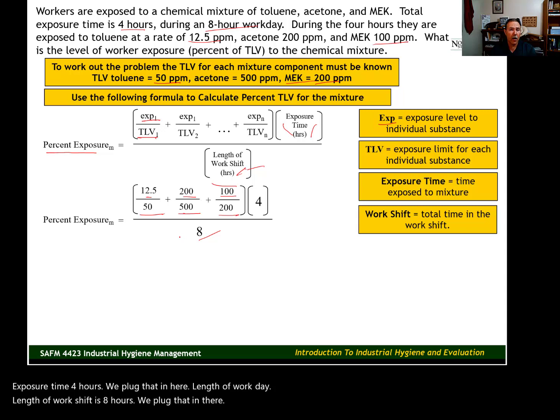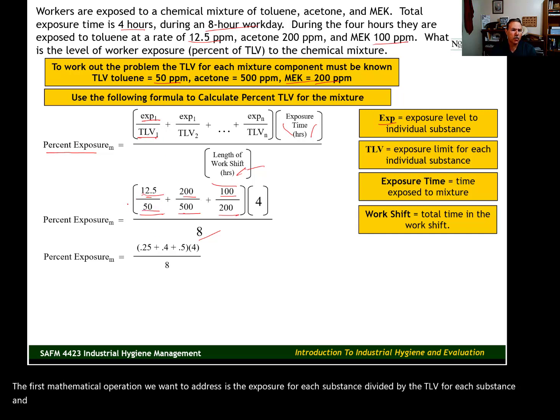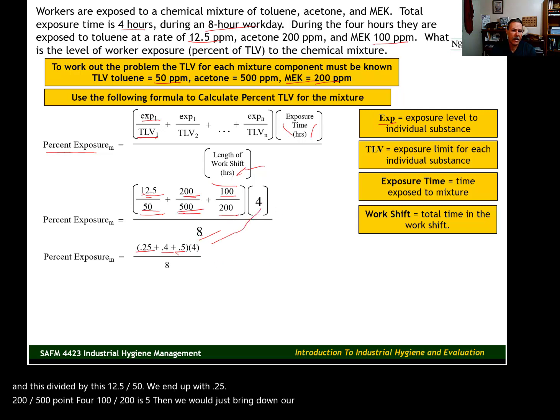We've got everything plugged in. Now we need to take care of the mathematical operations. The first mathematical operation we want to address is the exposure for each substance divided by the TLV for each substance. 12.5 divided by 50—we end up with 0.25. 200 divided by 500—0.4. 100 divided by 200 is 0.5. Then we just bring down our 4 and our 8 from the previous iteration.